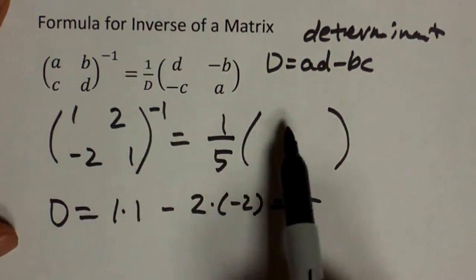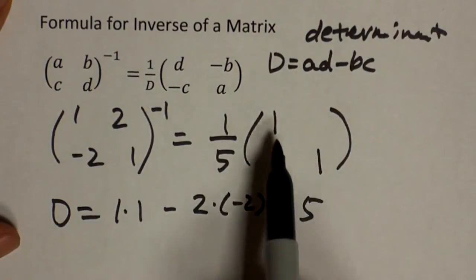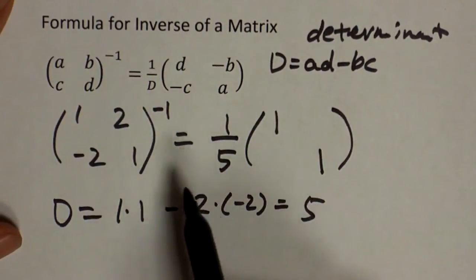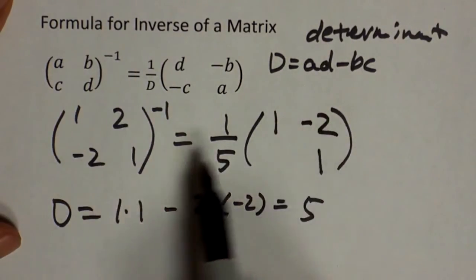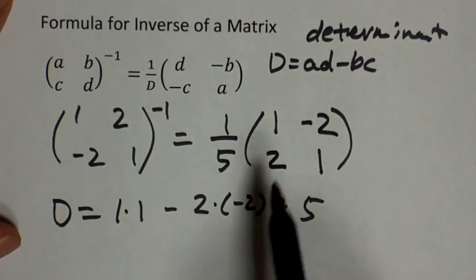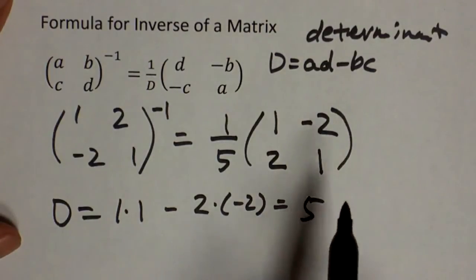We are going to take these two and switch them. Unfortunately, they are exactly the same, so you're not going to see anything different. And these two, we are just going to negate it. Negative of two, and negative of negative two, which is positive two. And that should be the inverse.